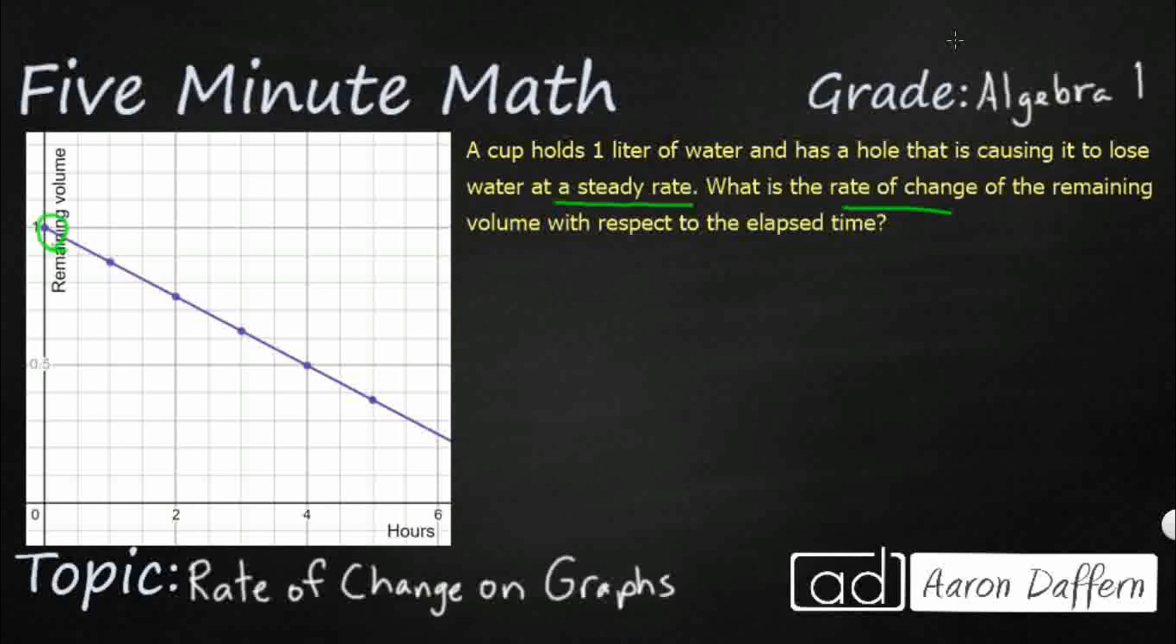So we have a constant rate of change here of the remaining volume with respect to elapsed time. So once again, it's asking us to find the remaining volume. So look at my remaining volume. That's my y-axis. And then with respect to elapsed time. It doesn't say time, but we know that hours is a unit of time. That's my x-axis. So it's the same thing. I'm looking for the rate of change. So when I'm looking at the remaining volume over the elapsed time, I'm looking for the change in y over the change in x. So you guessed it. It's just asking for slope again.